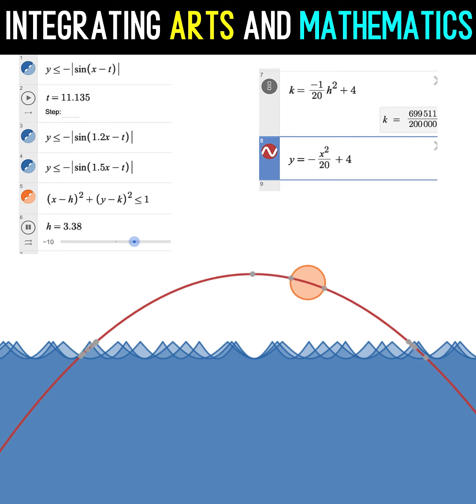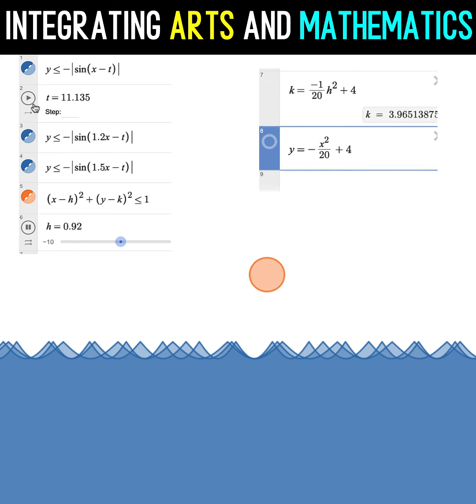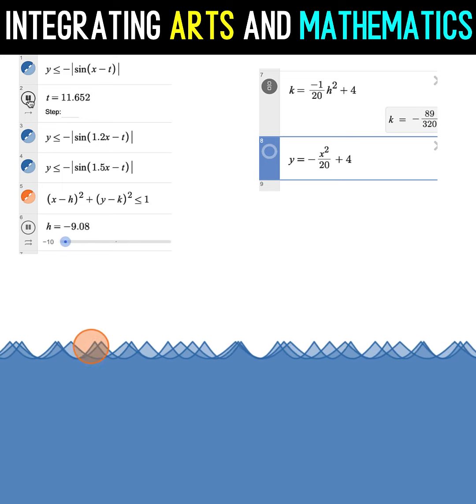Now, we do not want to see this parabolic path, so we can remove that. And we would like also to move the waves. So we are going to vary the value of t by automating its value. And now, we have this rising and setting sun animation.